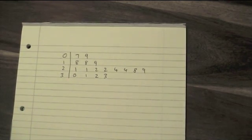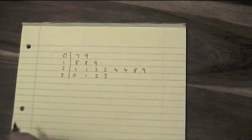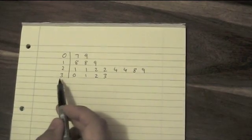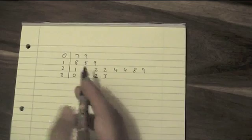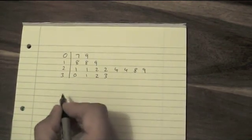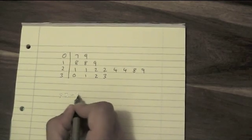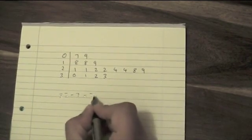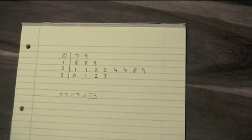You might be asked to work out the range. To do that, you need to work out what the biggest number is. So that's going to be 33. And what the smallest number is, and that's going to be 7. So you just do 33 take away 7, which is 26. So the range is 26.